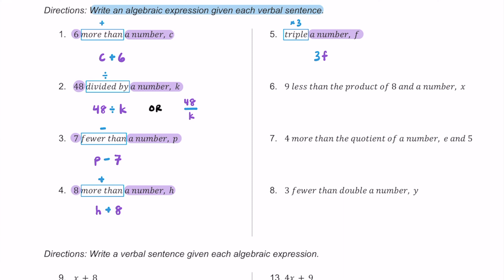For number six, we have nine less than the product of eight and a number x. The phrase 'less than' means we're subtracting, and 'the product of' means multiplying. Since multiplication comes before subtraction, we write the product of eight and x first: 8x. Then we subtract nine, giving us 8x minus nine. Writing it more simply: 8x − 9.